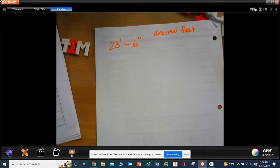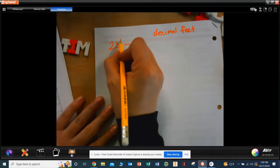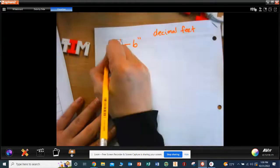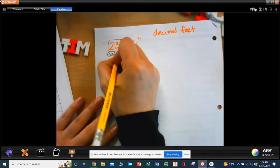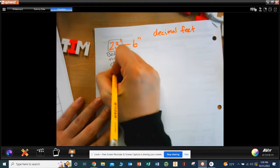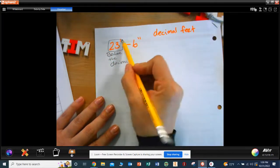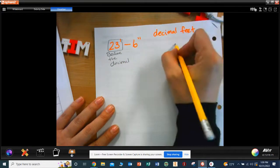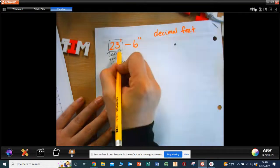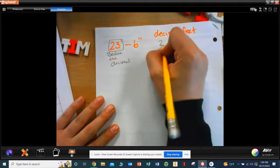Okay, so the feet is before the decimal. So the 23 feet goes before the decimal. So if I have a decimal, the 23 goes in front of the decimal. Easy enough.